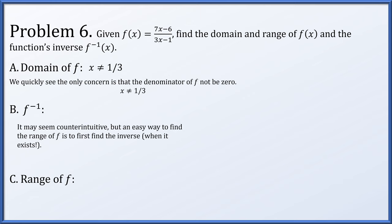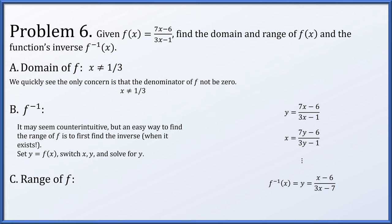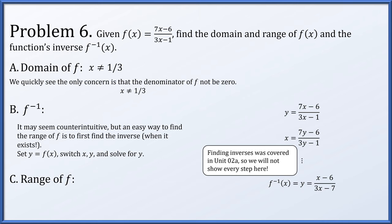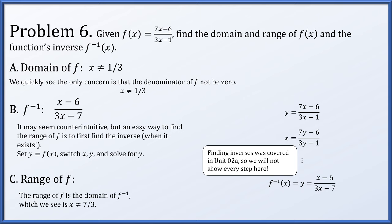The best way to find the range of f is to first find the inverse function. We set y equal to f of x, switch x and y, and solve. After doing the work, f inverse of x is x minus 6 over 3x minus 7. Finding inverses was covered in unit 2a, so if you need review, go back and look at those questions. The range of f will be the domain of its inverse. The inverse has denominator 3x minus 7, so its domain excludes 7 thirds, meaning the range of the original function is all y's other than 7 thirds.